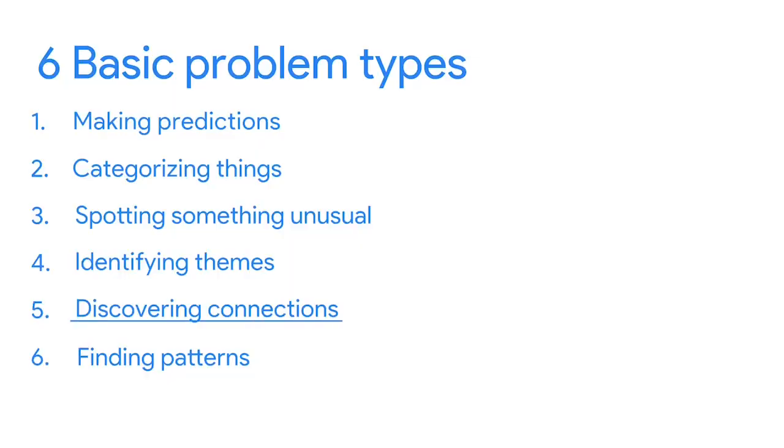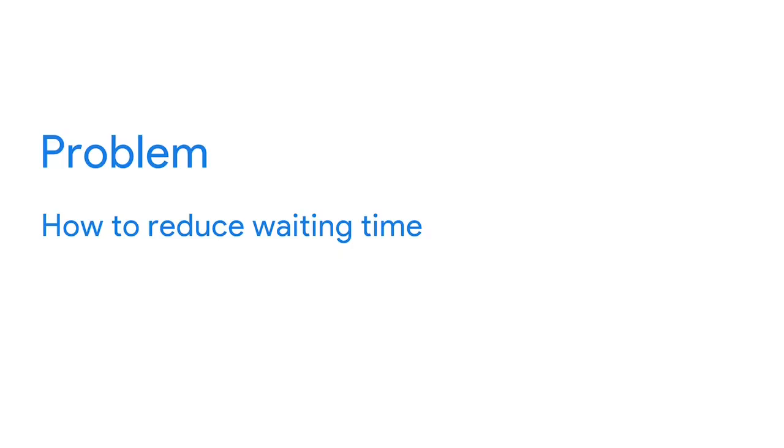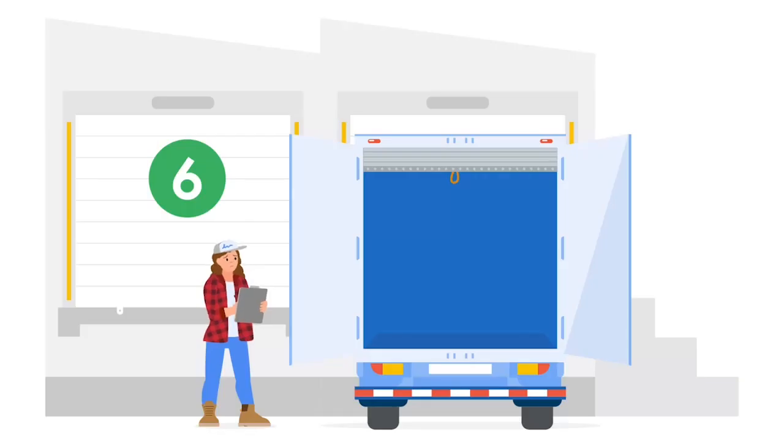Now we come to the problem of discovering connections, using something called third-party logistics. Third-party logistics partners help businesses ship products when they don't have their own trucks, planes, or ships. A common problem these partners face is reducing wait time — this happens when a truck driver arrives to pick up a shipment but it's not ready, costing both companies time and money and stopping trucks from getting back on the road.